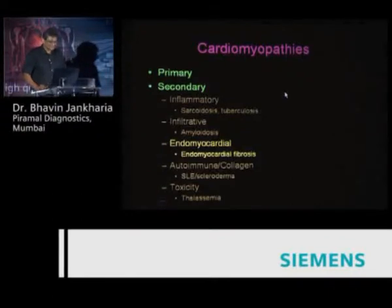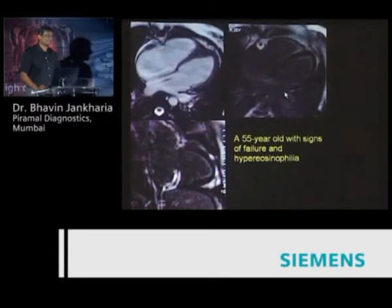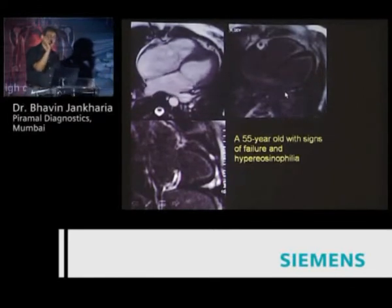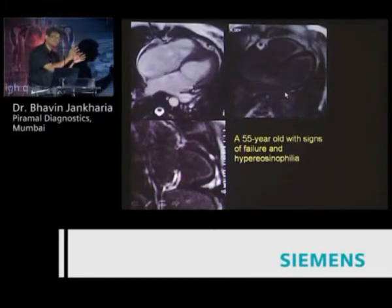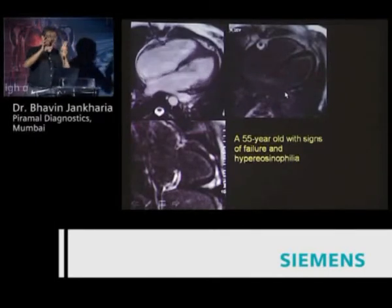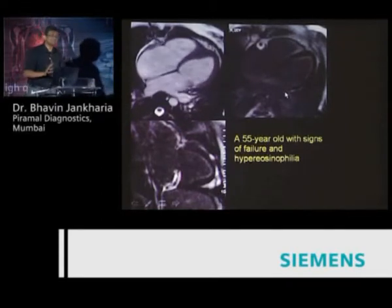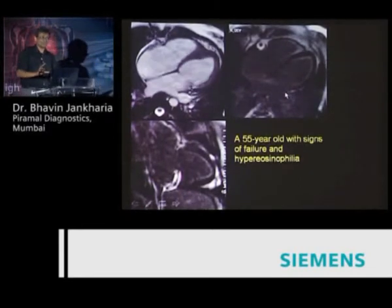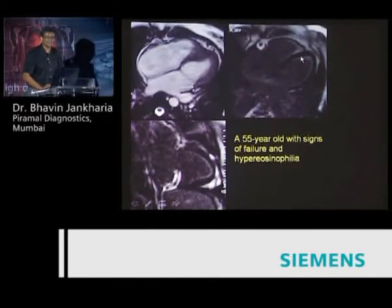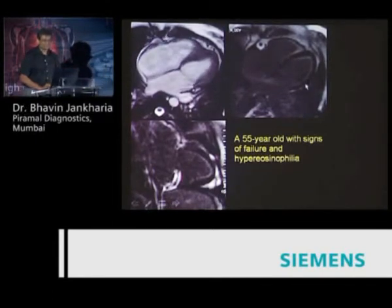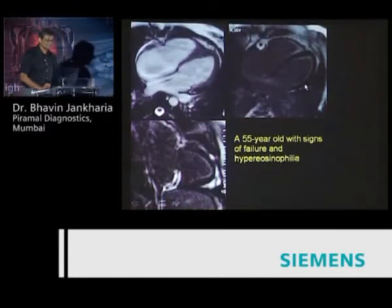The next cardiomyopathy is endomyocardial fibrosis, which is quite common and easy to diagnose because it has characteristic appearances. Patients with endomyocardial fibrosis are not like patients with granulomatous cardiomyopathy. Patients who have EMF are invariably admitted with heart failure and are sick because they have an ongoing inflammatory process.